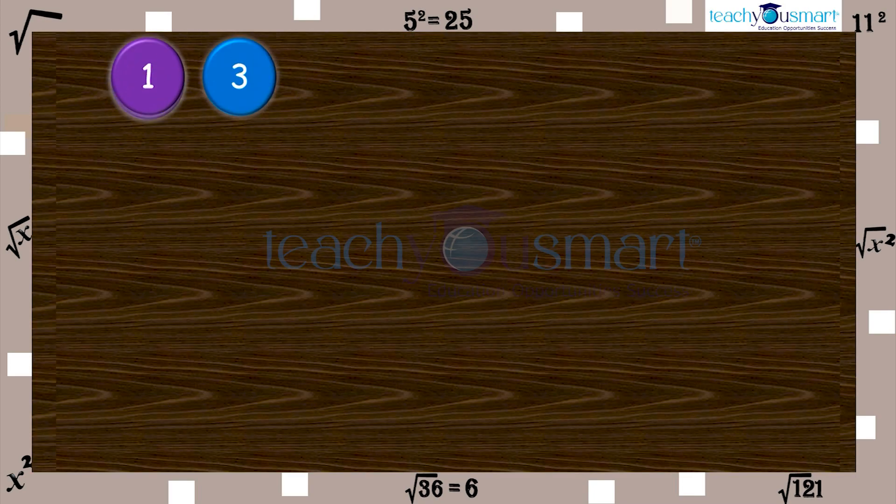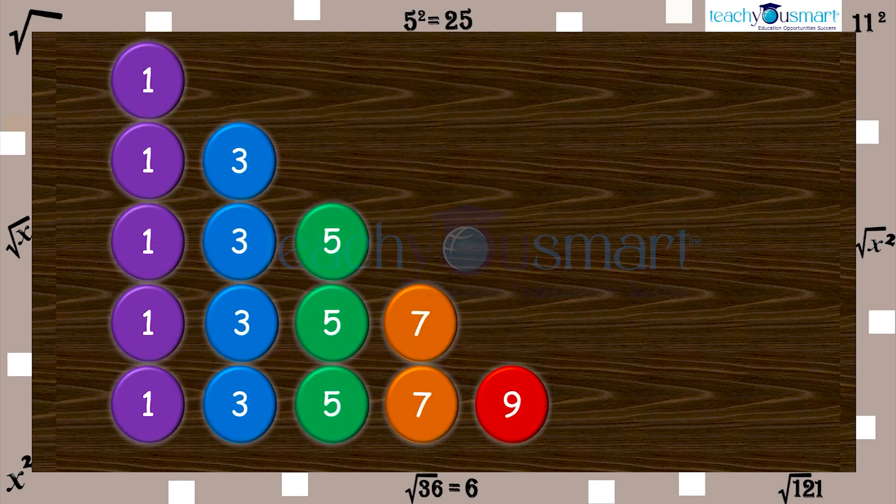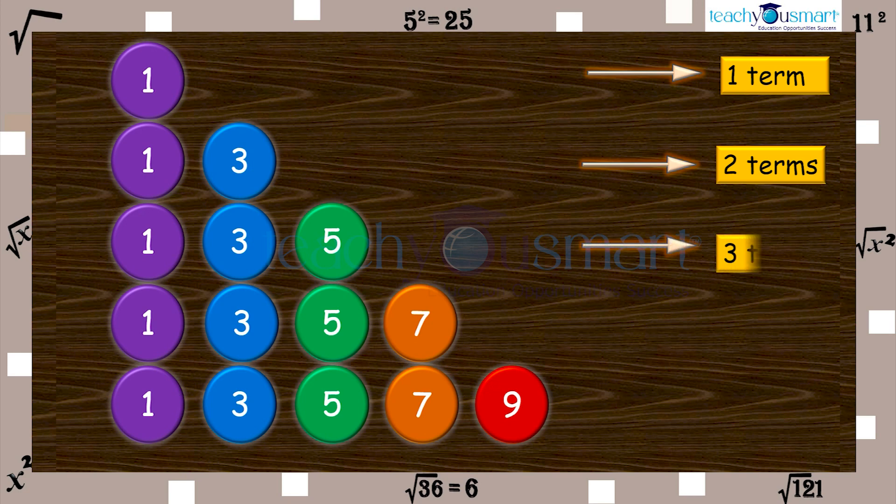Now, let's have a look at another interesting pattern. Have you understood the patterns? Yes, the pattern is made of only odd numbers, and the number of terms in first row is one, and the number of terms in second row is two, and in the third row is three, and so on.